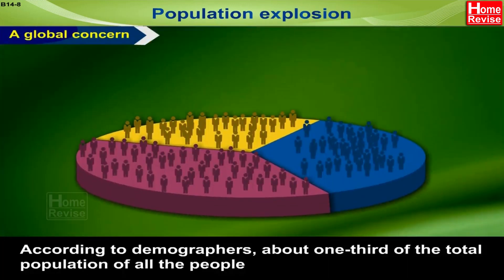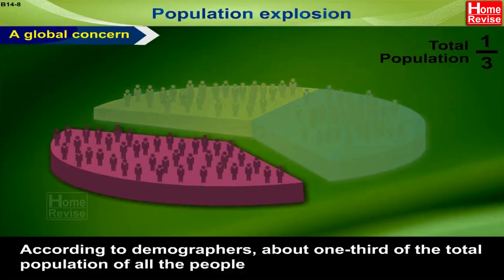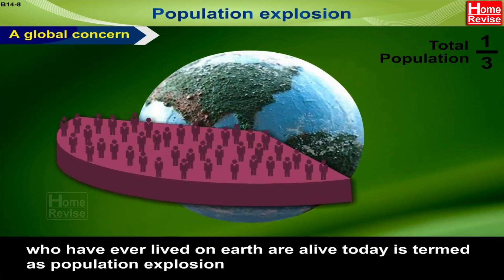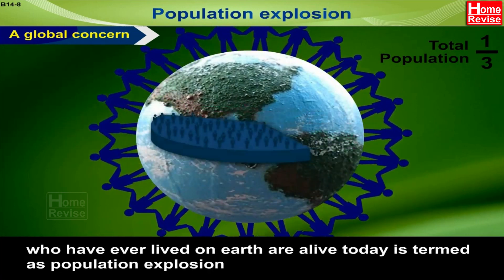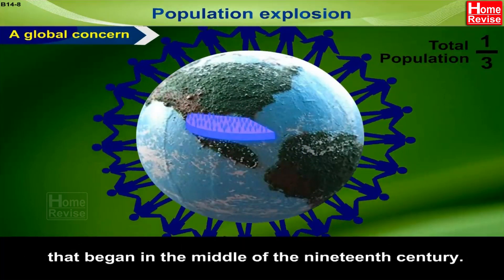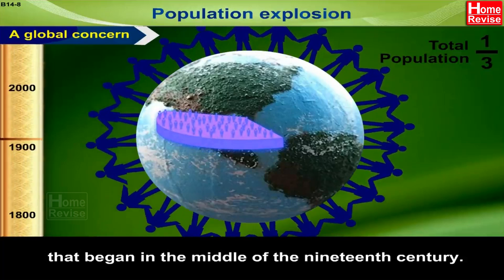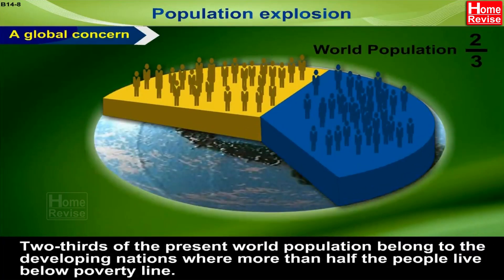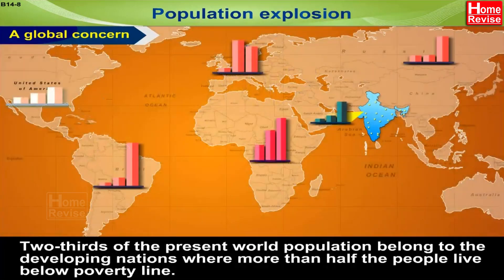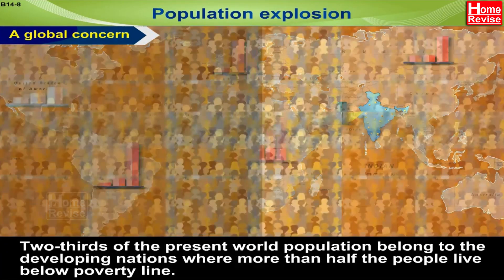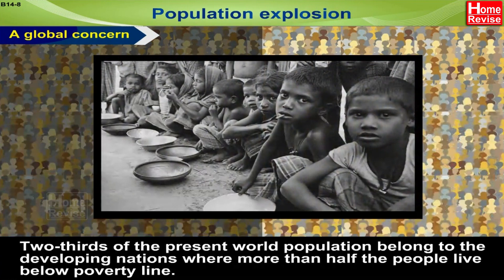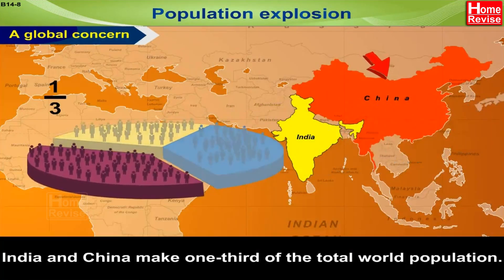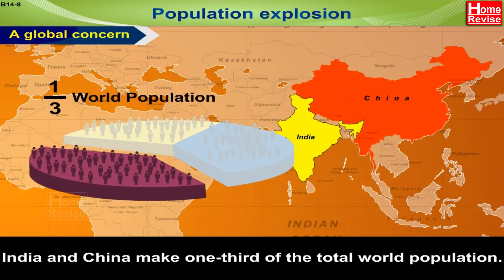Population explosion — a global concern. According to demographers, about one third of all the people who have ever lived on Earth are alive today — this phenomenon is termed population explosion, which began in the middle of the 19th century. Two thirds of the present world population belong to developing nations, where more than half the people live below the poverty line. India and China together make up one third of the total world population.